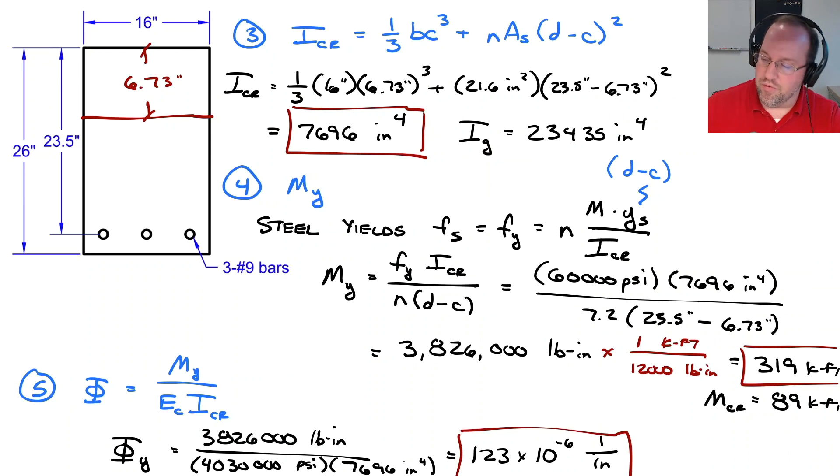Now, once again, if we want to compare that to my curvature at cracking, that was about 10 to 12 times less. So if we look at our curvature at cracking, it was roughly equal to 10 times 10 to the negative sixth one over inch. So a considerably smaller number.